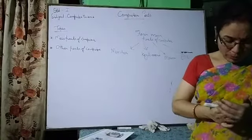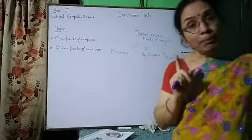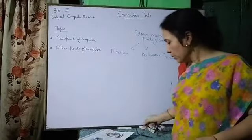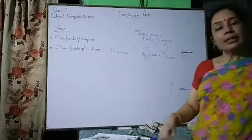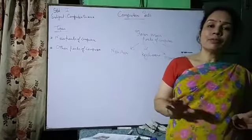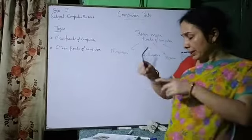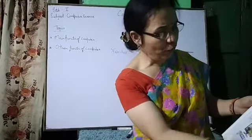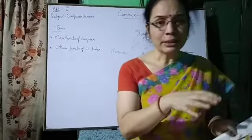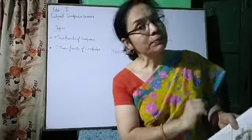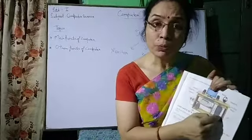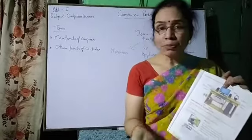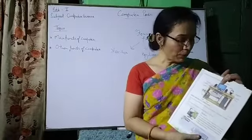There are many parts, but these 4 are the main parts of computer. These are called main parts because if any one part is missing, the system will not work. For example, though you have speaker, CD, DVD, headphone, pen drive, monitor, keyboard — all the things — but if you don't have the CPU box, all other parts are useless. Because CPU is the main part of computer.